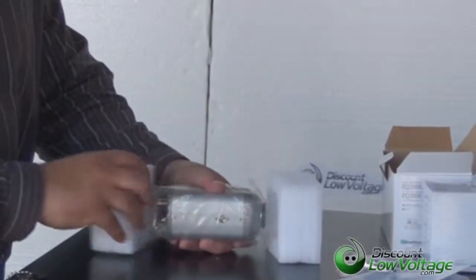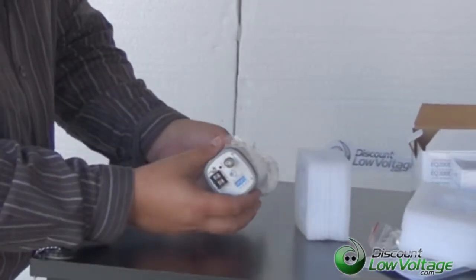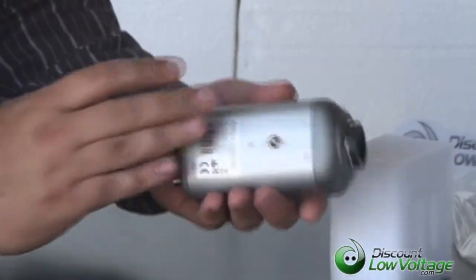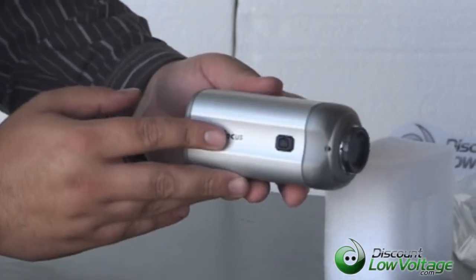Okay, now this is a low-light camera. This is it right here. It is not sold with the lens. That is separate.